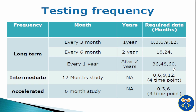Intermediate stability study is designed to moderately increase the rate of chemical degradation or physical changes of drug substance or drug product. The intermediate stability study is a 12-month study. The testing frequency for intermediate stability study is a minimum of 4 time points including the initial and final time points, i.e. 0 month, 6 month, 9 month and 12 month.